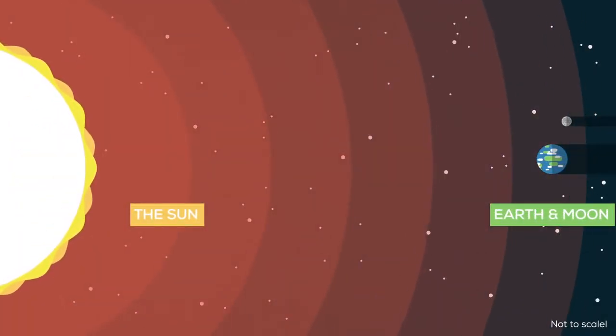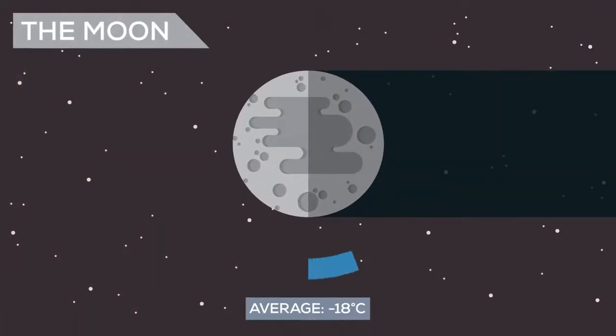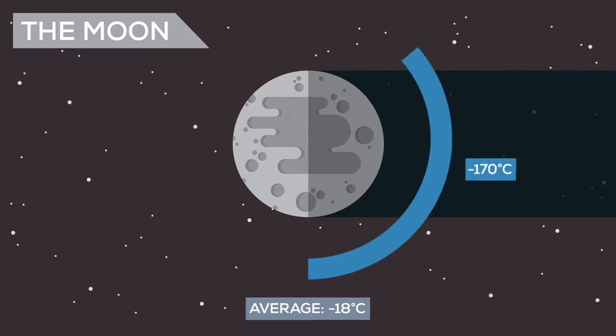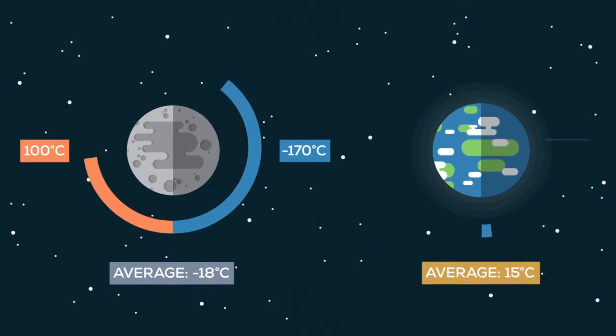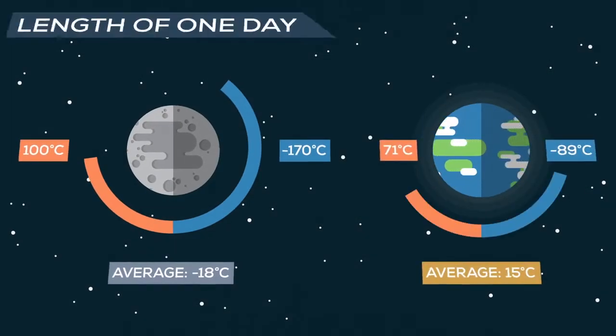The Earth and the Moon are basically the same distance from the Sun, yet temperatures on the Moon average an unlivable negative 18 degrees Celsius. And even deadlier, they range from negative 170 Celsius during lunar night to 100 Celsius at lunar noon, regularly exceeding both the coldest and hottest temperatures ever recorded on Earth.